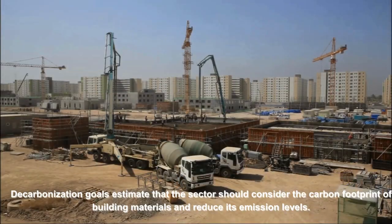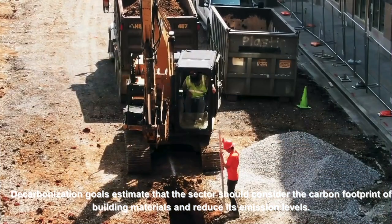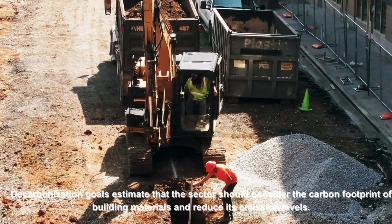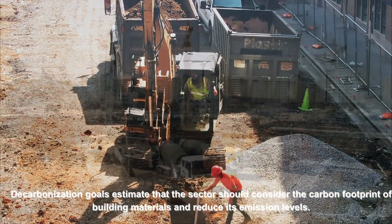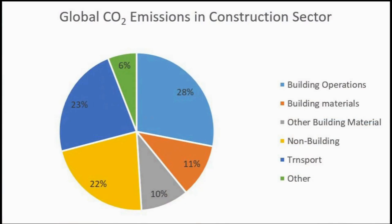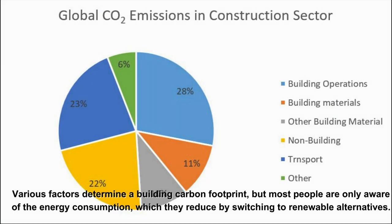Decarbonization goals estimate that the sector should consider the carbon footprint of building materials and reduce its emission levels. The building and construction sectors account for nearly 40 percent of global energy-related carbon dioxide emissions in constructing and operating buildings, including the impacts of upstream power generation. Various factors determine a building's carbon footprint, but most people are only aware of energy consumption, which they reduce by switching to renewable alternatives.